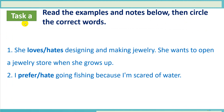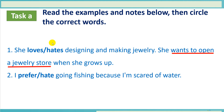Okay class, we do Task A — read the examples and notes, then circle the correct words. Let's check the answers. Number one: she wants to open a jewelry store, so the correct word is loves. She loves designing and making jewelry. She wants to open a jewelry store when she grows up.